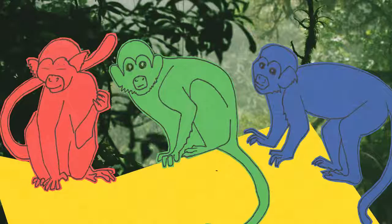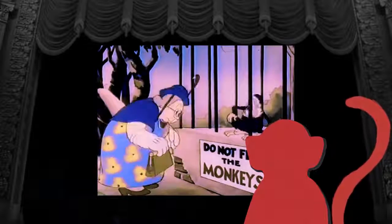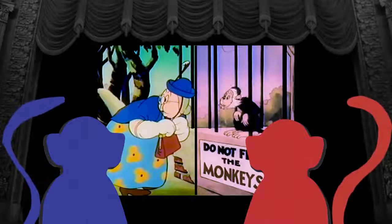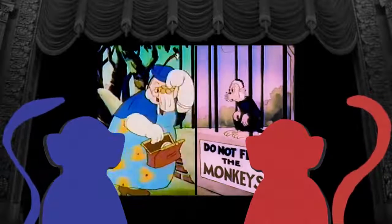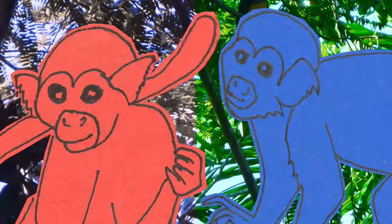Color vision more than likely evolved in primates about 35 million years ago. Some monkey species have incredibly interesting color vision — some monkeys in the population see two colors and other monkeys see three. So you have this population of monkeys where one part of it is seeing a completely different colored world than the other part of it.